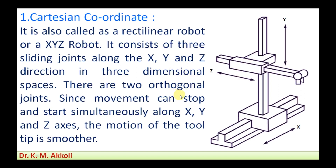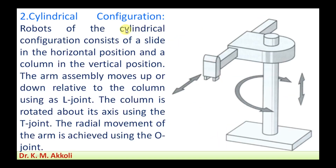There are two orthogonal joints in this configuration. Since movement can start and stop simultaneously along the XYZ axes, the motion of the tool tip is smoother. The movement is along the X-axis, Y-axis, and Z-axis. Where movement of the end effector is required in all three linear dimensions, we can use the cartesian coordinate system.